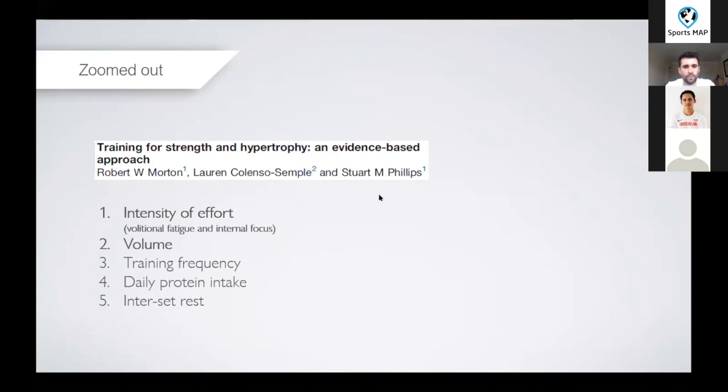They find that the two most important variables are the intensity of effort and volume. If we break down that intensity of the effort a bit more, we're talking about volitional fatigue, so achieving absolute fatigue on the muscle that we're targeting and an internal focus. The fatigue is independent of rep number, so whether you go high reps or low reps it's not too important. The most important thing is that we achieve fatigue in the muscle.